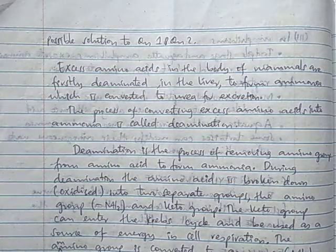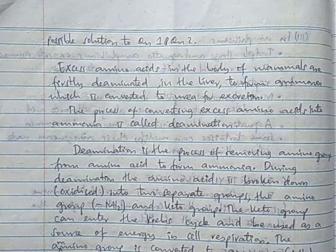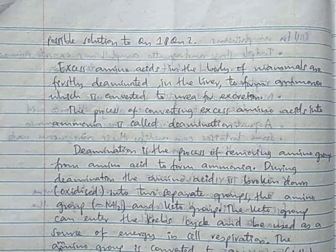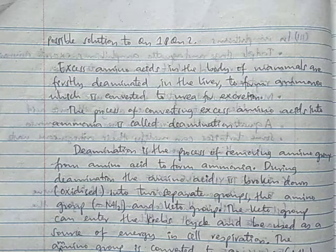In this lesson, we'll explain excretory products for human beings, specifically urea. Urea comes from ammonia.